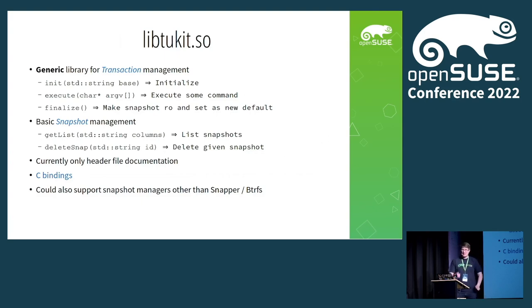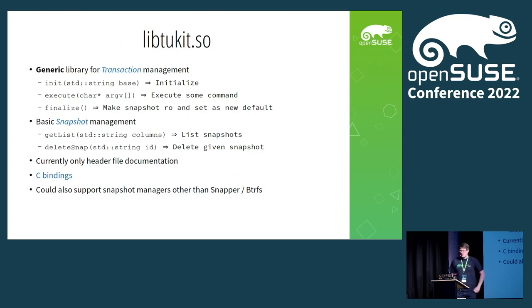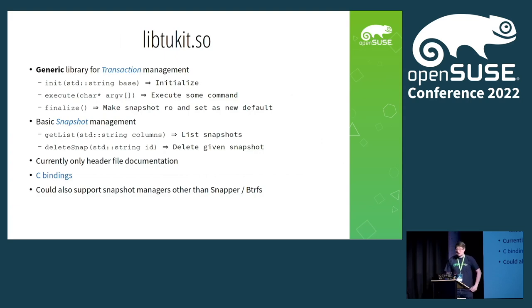We also have C bindings, and I'm actually using them for the tukit-d DBus interface, so we have an active user of those. As you can see from the method names, everything is built to be quite generic. The only current implementation we have is the snapper and Btrfs interface — a combined one. But in theory, everything which provides snapshot management can be inserted there as a backend. If you want setFS support, for example, we still have a ticket open for that.